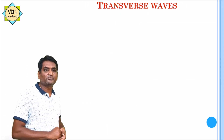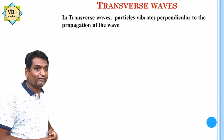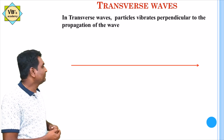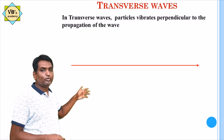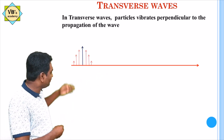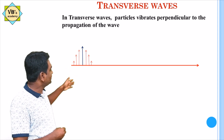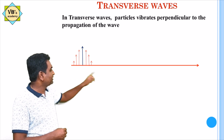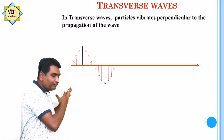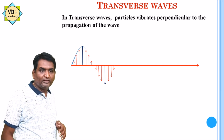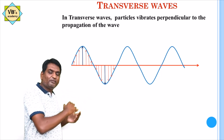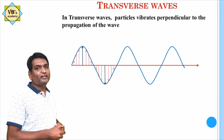Let us elaborate on transverse waves. In transverse waves, particles vibrate perpendicular to the propagation of the wave. Here, the wave propagates in this direction, and the particles are vibrating in the upward direction — perpendicular to the propagation. Simultaneously, they also vibrate in the downward direction. These vibrations combine to form a wave that moves from one place to another. This is what a transverse wave looks like.